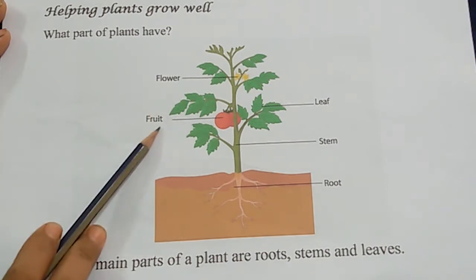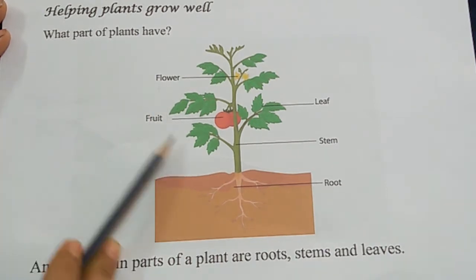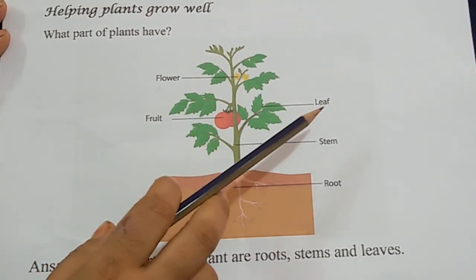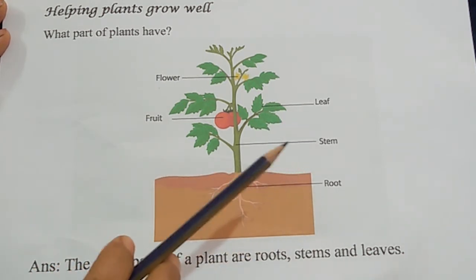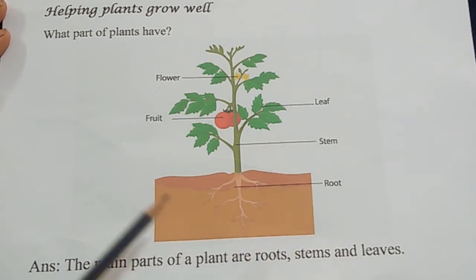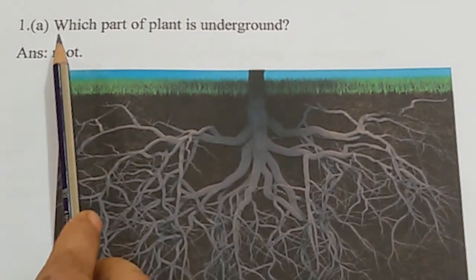Flower and fruit are not main parts of a plant. Leaf, stem and root are main parts of a plant. So our answer is: the main parts of a plant are roots, stems and leaves. Next question.